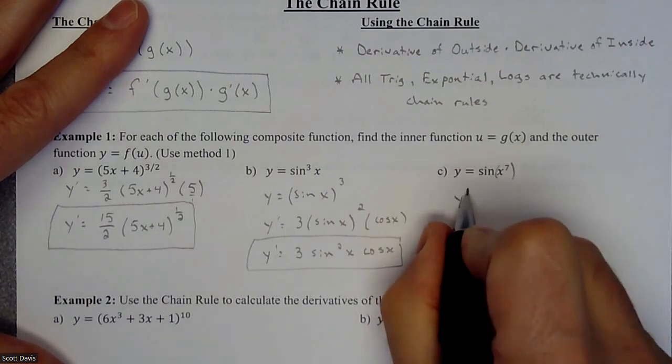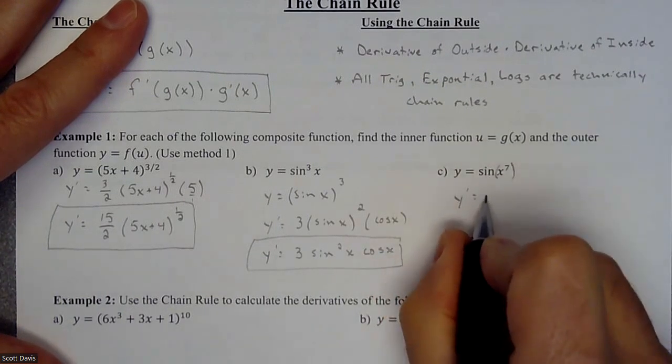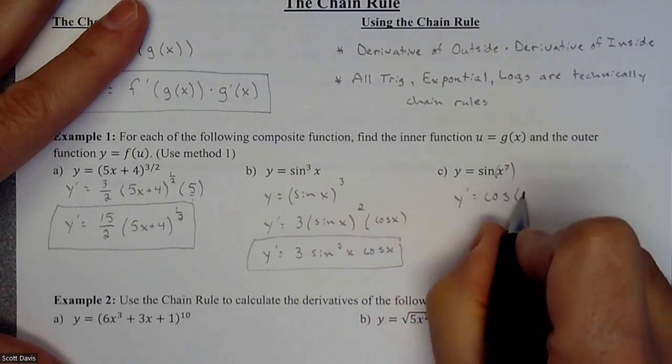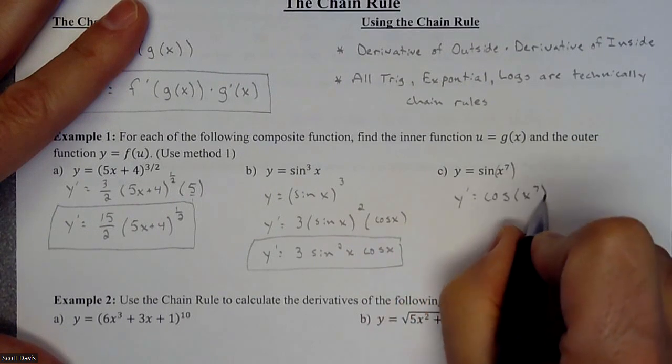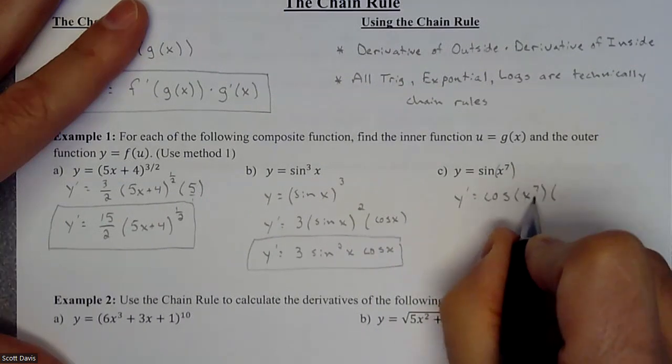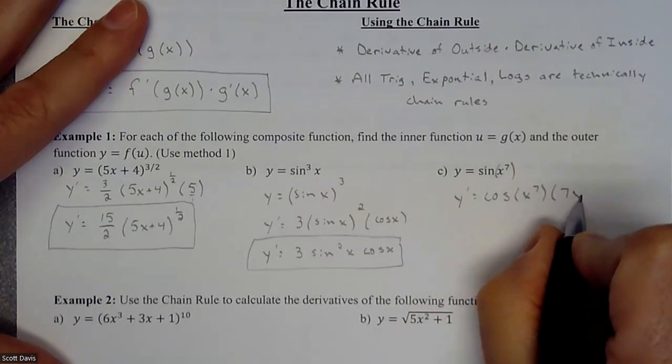we're going to do the derivative of sine is cosine x to the seventh times the derivative of the inside, which is going to be seven x to the sixth.